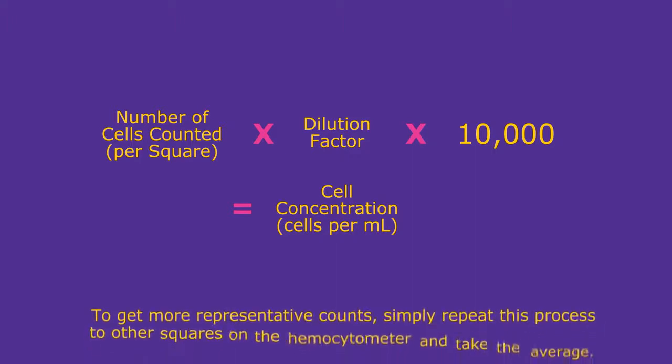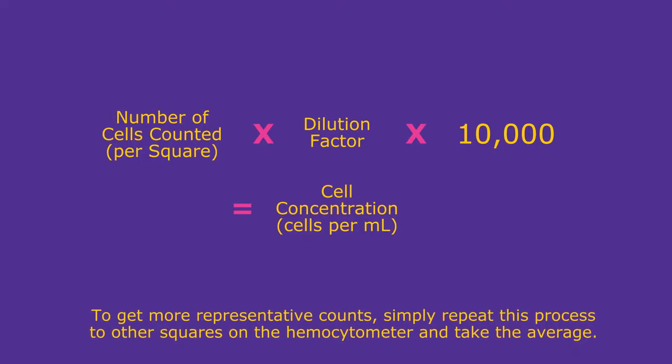To get more representative counts, simply repeat these processes to other squares on the hemocytometer and take the average.